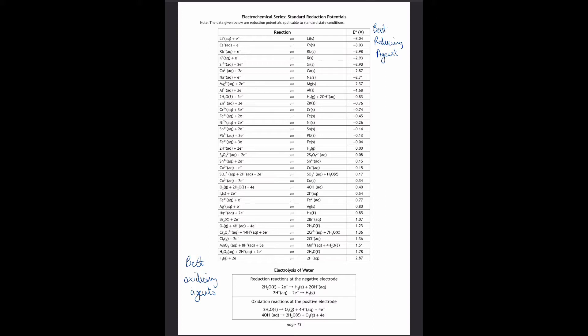There is one substance that can be used as a reducing agent that's not shown on the electrochemical series anywhere, and that is carbon monoxide. Carbon monoxide readily becomes carbon dioxide — going from CO to CO₂ — that's gaining oxygen, so that means it's readily oxidized, therefore making it a good reducing agent, because remember it's always the opposite. So that one's not on the data booklet, so you might want to add it on as a suitable reducing agent.